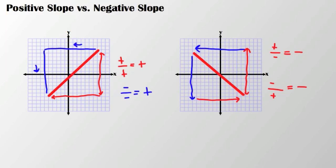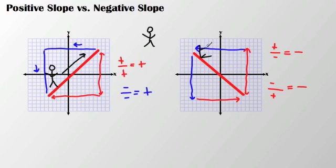One way to think about it: walking up the stairs — you're happy, you're walking up the stairs — that's positive slope. And then sliding down — that's negative slope.